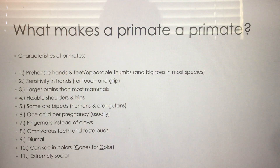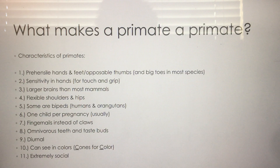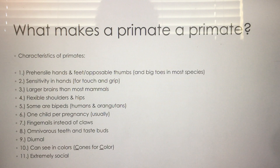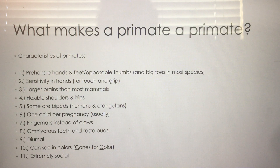We are diurnal — we sleep at night and come out during the day. Because we come out during the day, we see in color. Remember rods and cones: it is the cones that allow color vision. We are also extremely social — that's why people love their dogs, since dogs also have that pack mentality. Cats are typically solitary. Primates are rather unique in being highly social.